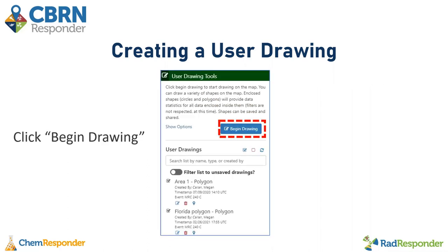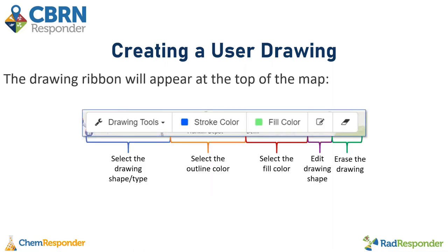In the user drawings tools menu, you will see any existing user drawings on the event that either you or someone else in the event has created. To begin drawing, click the begin drawing button. Once you click begin drawing, you will see a drawing ribbon appear at the top of the map. I'll go over some of these features in depth throughout the webinar, but this is a quick overview of what each of the buttons do.